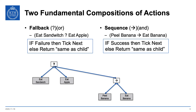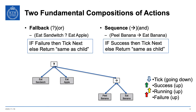Now we connect these two compositions of two actions each to a small behavior tree and see what happens when we run it. There's a tick going down — all behavior trees are run by ticks at some frequency, say 10 times a second or whatever your system can handle. Success, running, and failure return statuses are indicated by up-pointing arrows in green, yellow, and red. Executing this behavior tree: you tick the root and the root ticks its first child, eat sandwich. Imagine eat sandwich returns failure — then this fallback, getting failure, ticks the next child, which is eat apple. Imagine this returns running; then the root returns running and the agent eats the apple. But imagine instead we failed eating the apple.